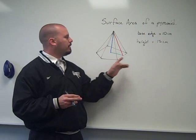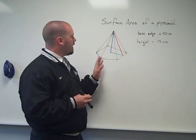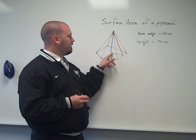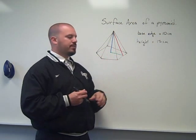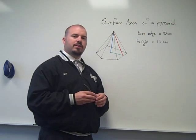I've chosen this particular problem with the height being given instead of the slant height to show you how we can use the height, in this case the apothem, in order to find the slant height. Sometimes you have to do a little bit of extra work first to be able to find the surface area.